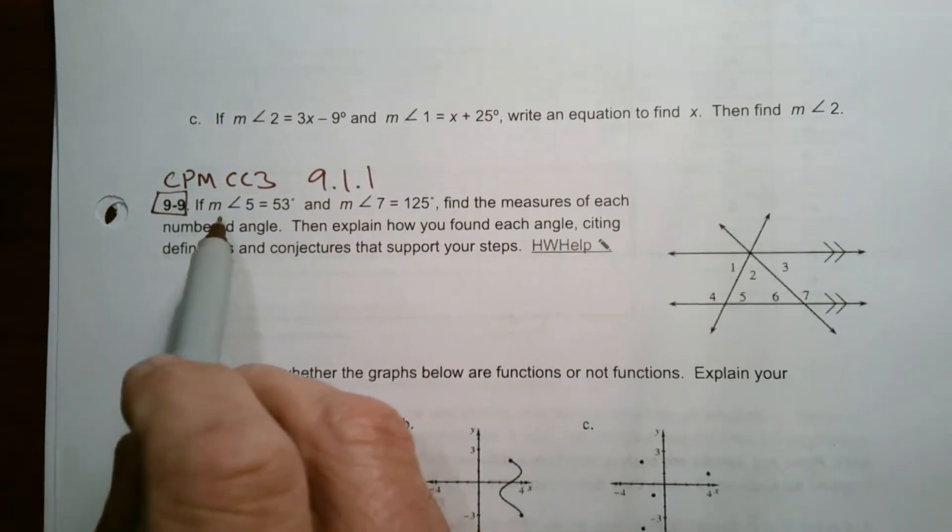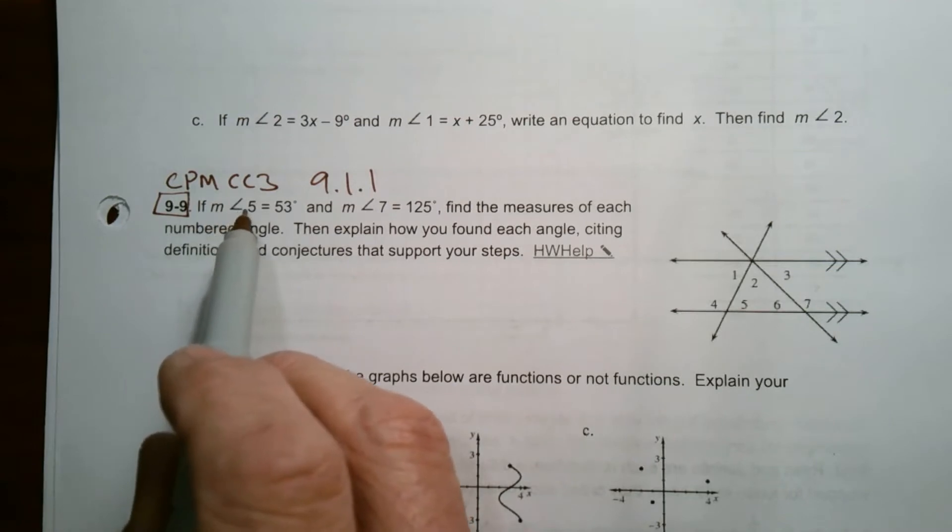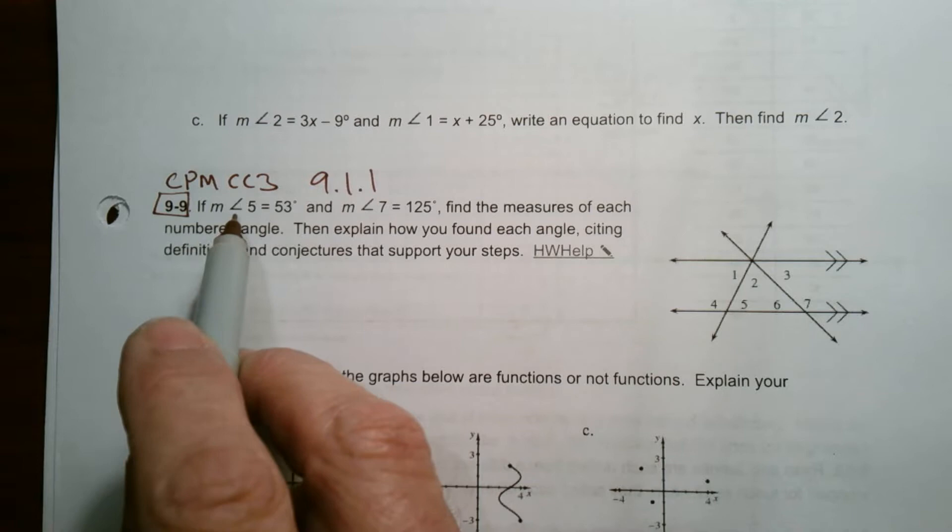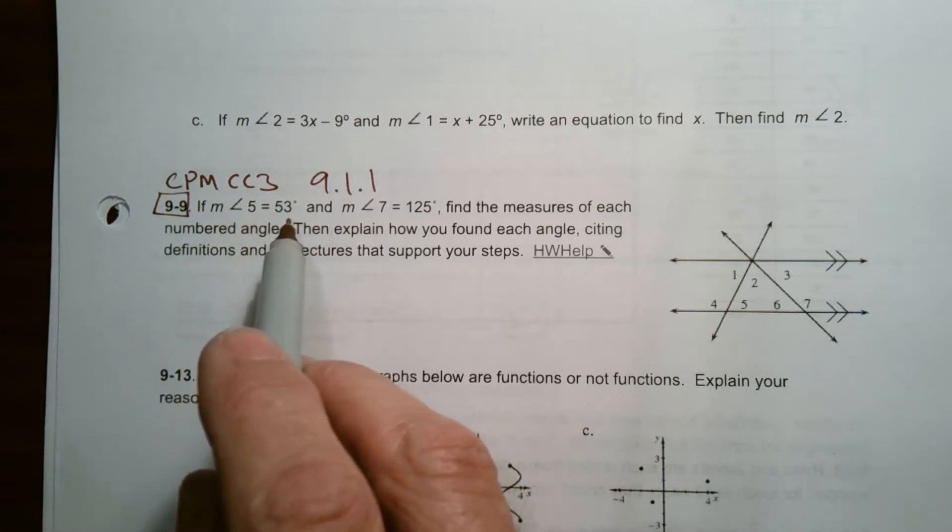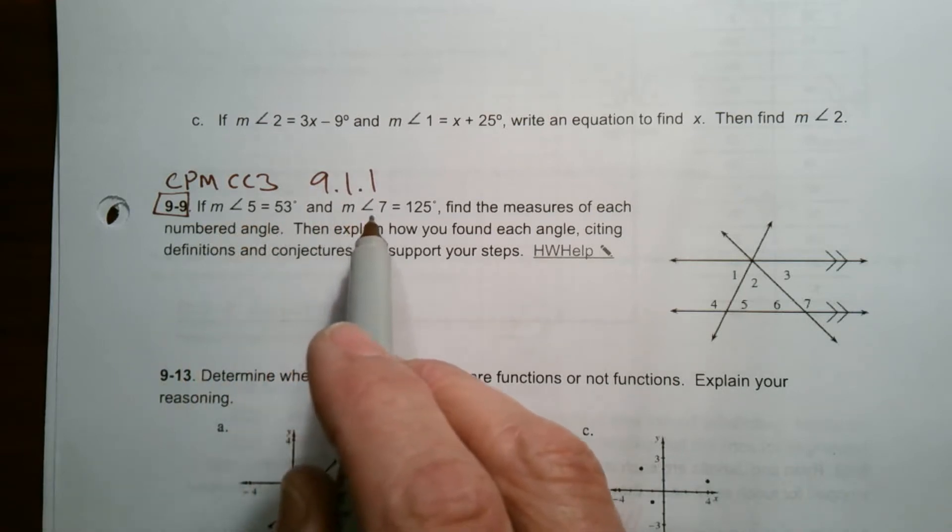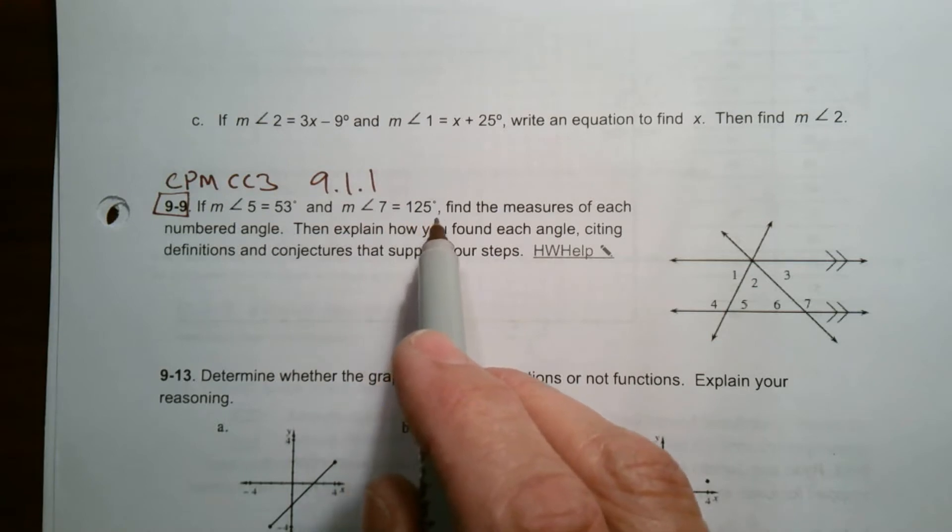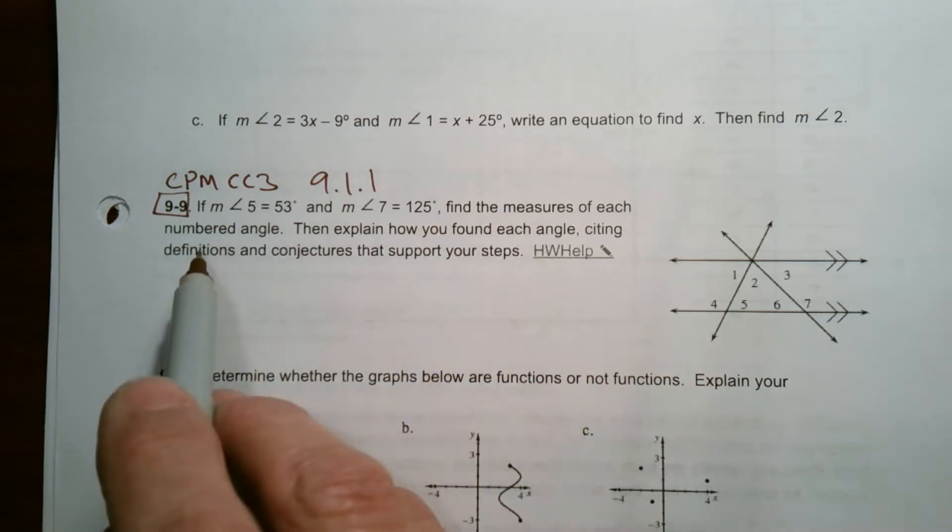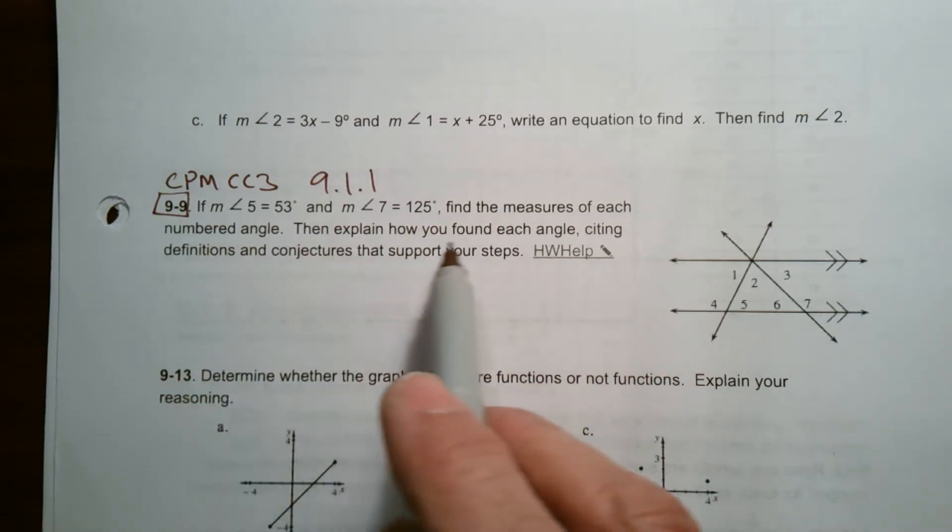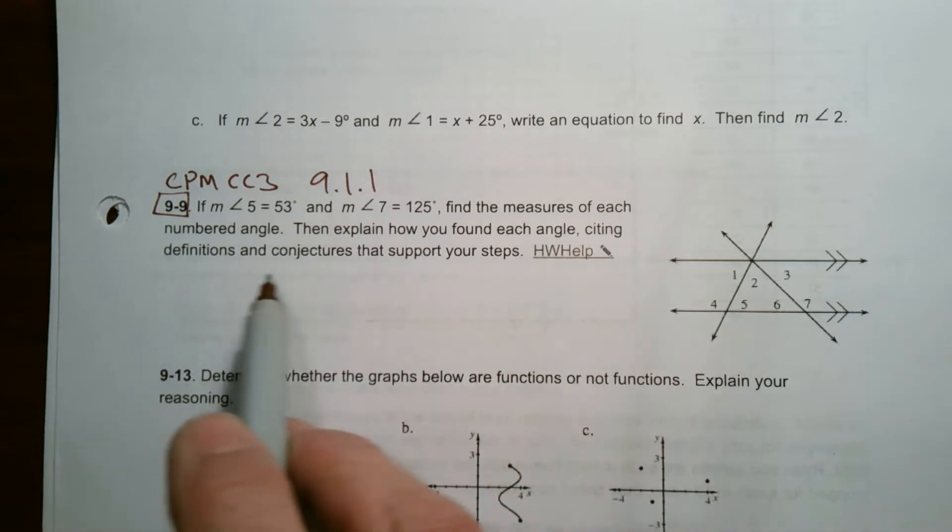So it says if the measure of angle 5 equals 53 degrees, and the measure of angle 7 equals 125, find the measurements of each numbered angle. Then explain how you found each angle, citing definitions and conjectures that support your steps.